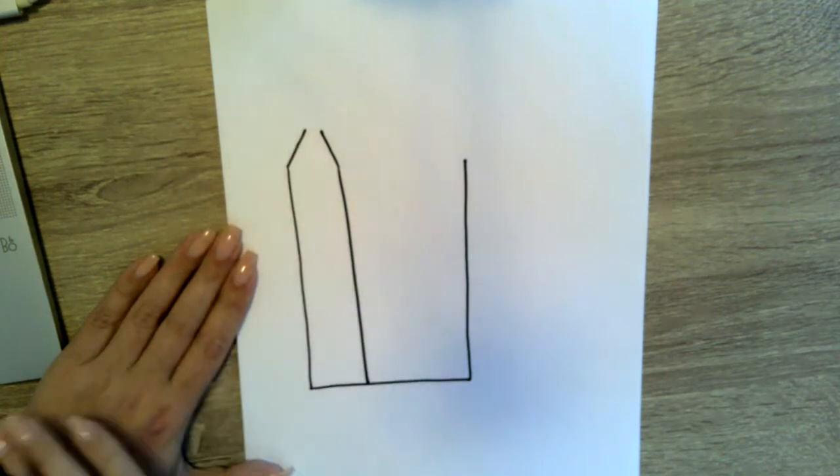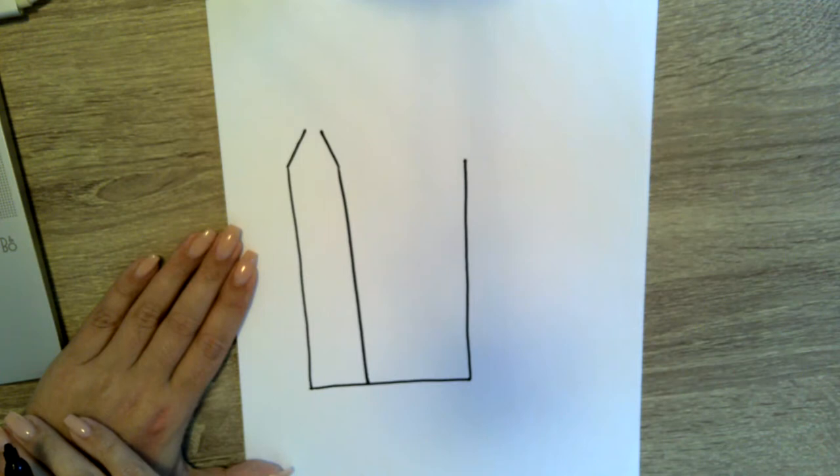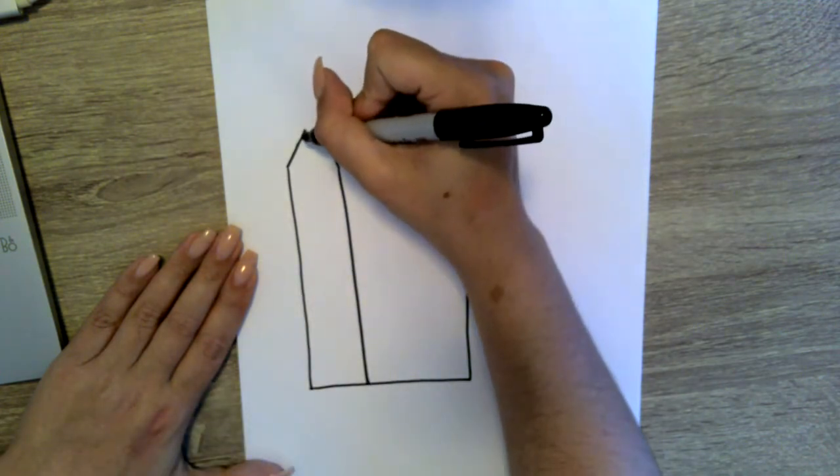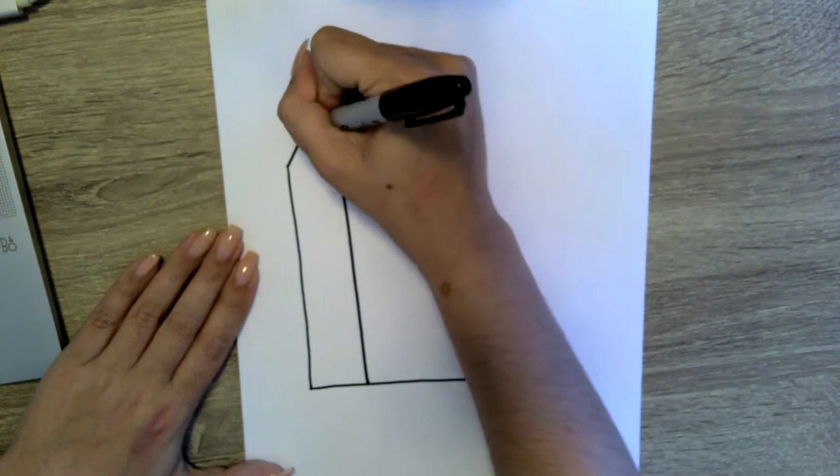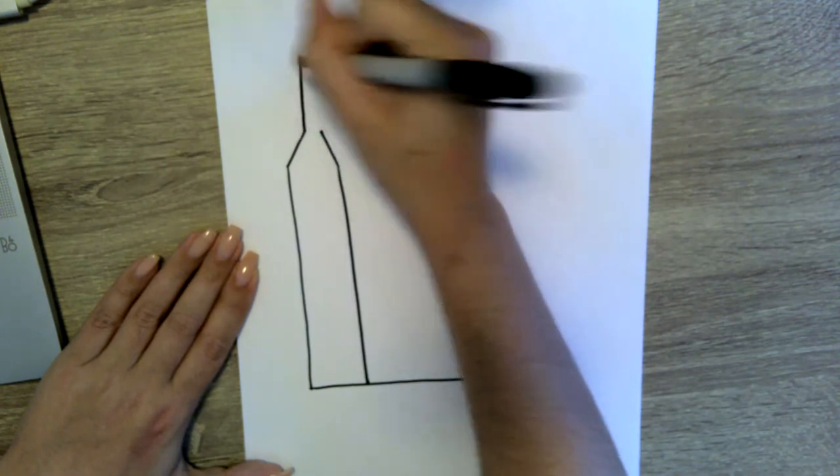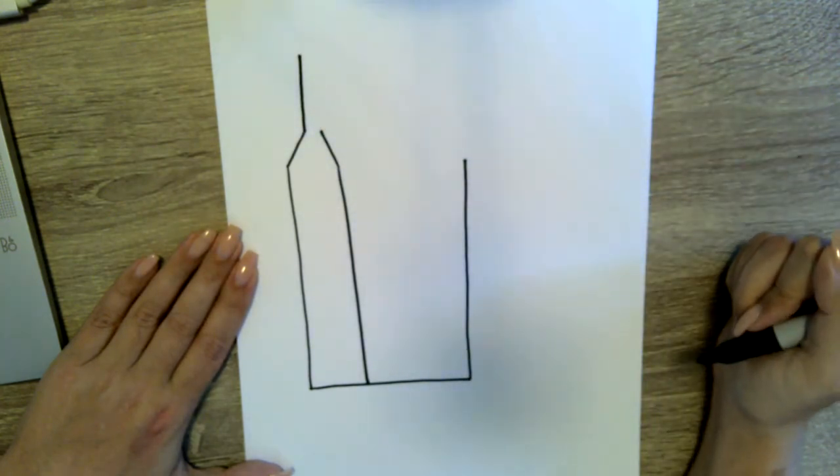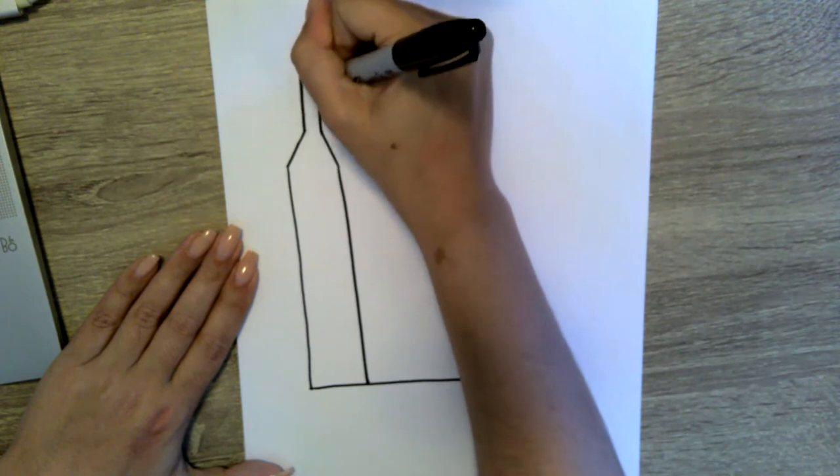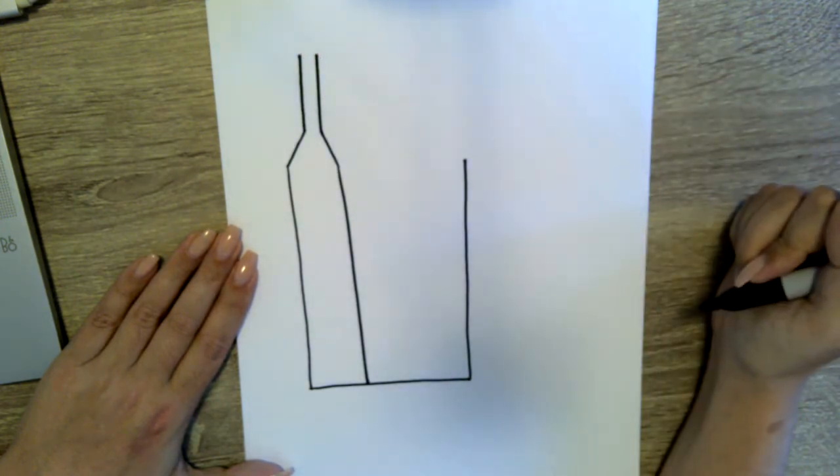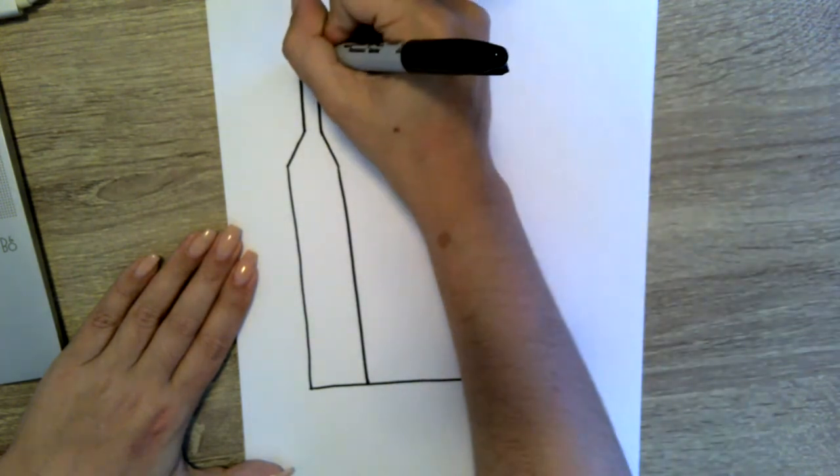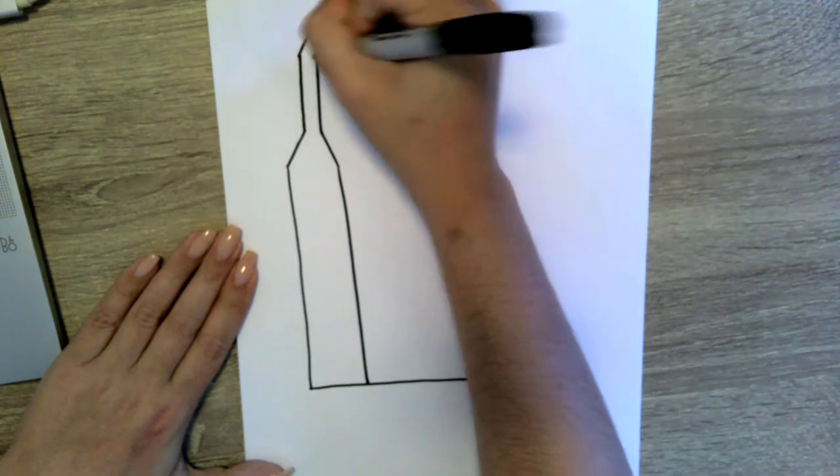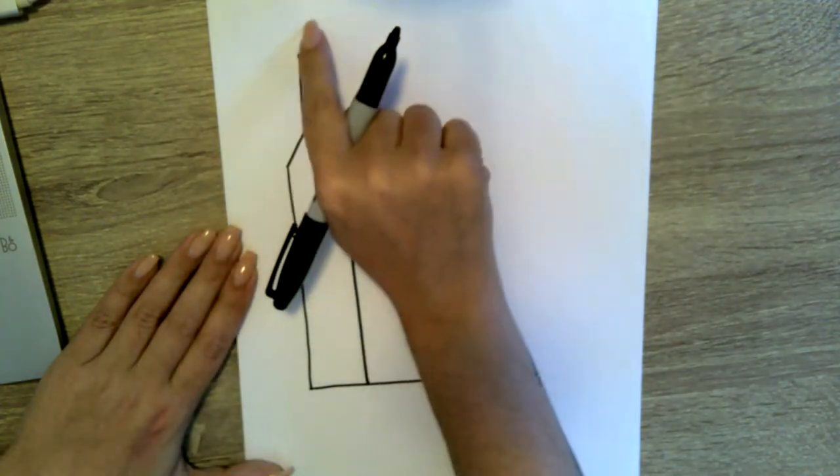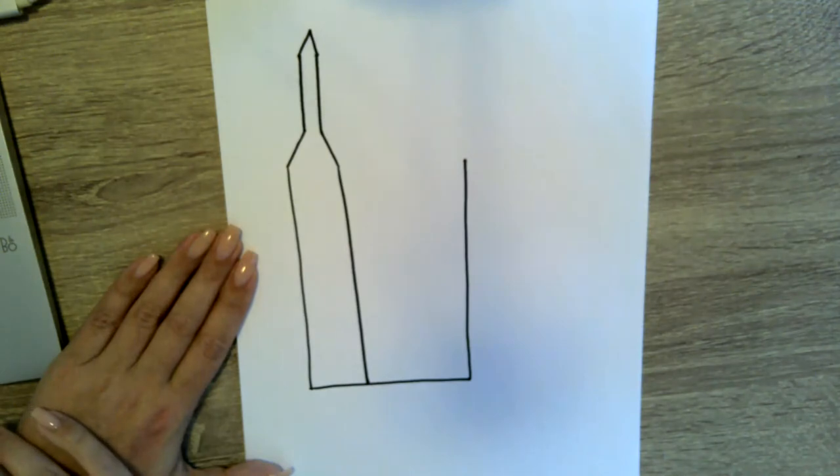We're going to continue our grain elevator going up. Straight line up, straight line up, and then you can connect them with a point, almost like with a triangle. Good job. Then we're going to do the other side of the elevator. This is more the side facing towards us, this is going to be a side kind of facing sideways.